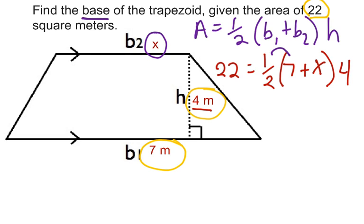In these problems, we have to. Because we can't add 7 plus x, we have to use the distributive property. So we have 22 equals half of 7 is 3 1/2.